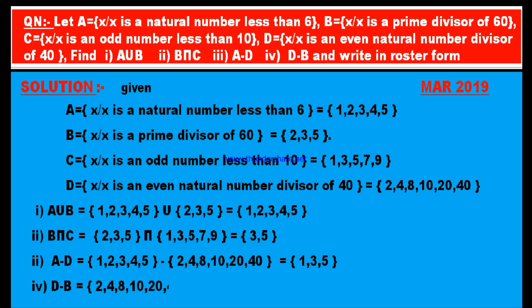D minus B: D = {2, 4, 8, 10, 20, 40} minus B = {2, 3, 5}. The elements that remain only in the first set are 4, 8, 10, 20, and 40. Therefore, D minus B = {4, 8, 10, 20, 40}.